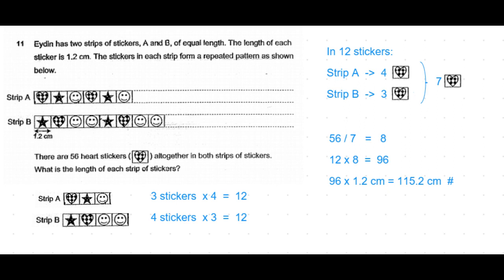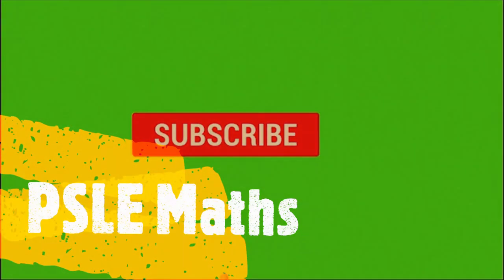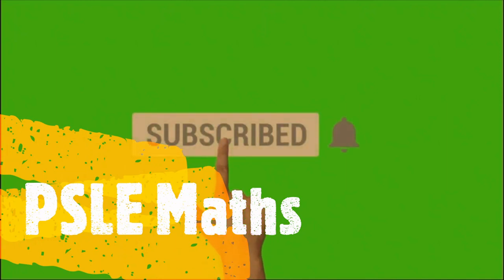If the question asked for the number of stickers, 96 would be the answer. But here, each sticker is 1.2 centimeters long and there are 96 stickers total. So 96 times 1.2 centimeters equals 115.2 centimeters—that's the length of the strip. Hope you liked this video. Please subscribe to this channel for more problem sums.